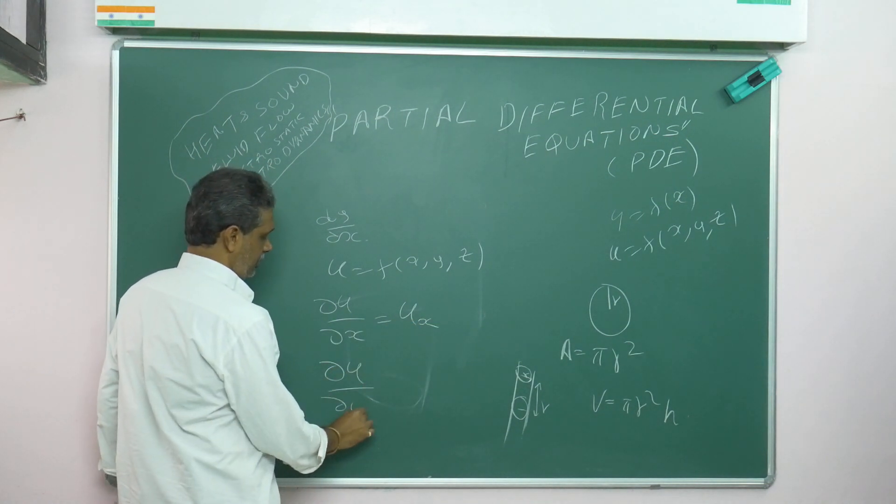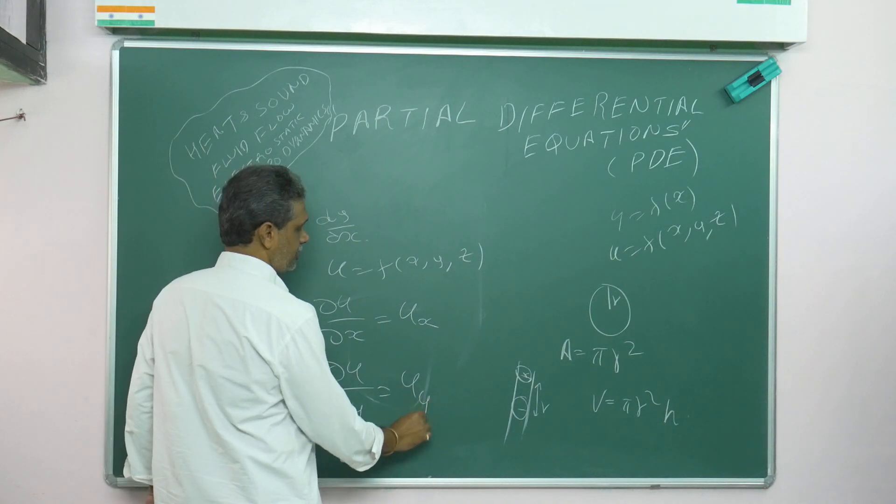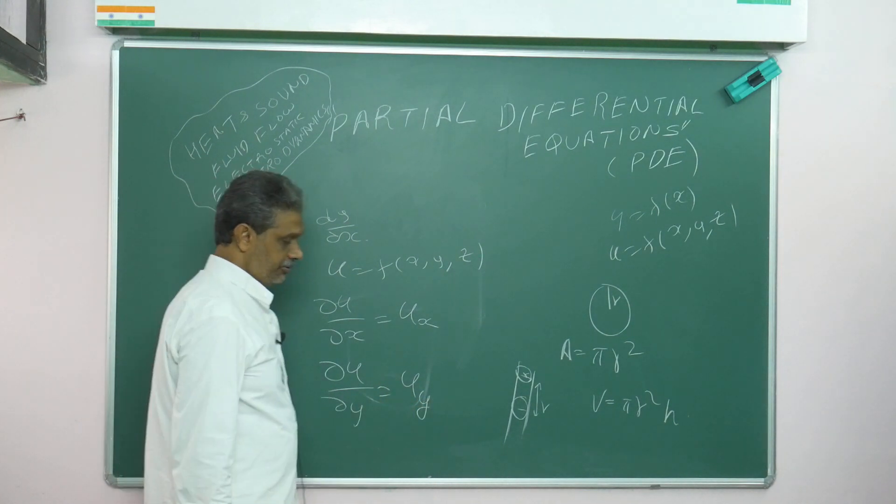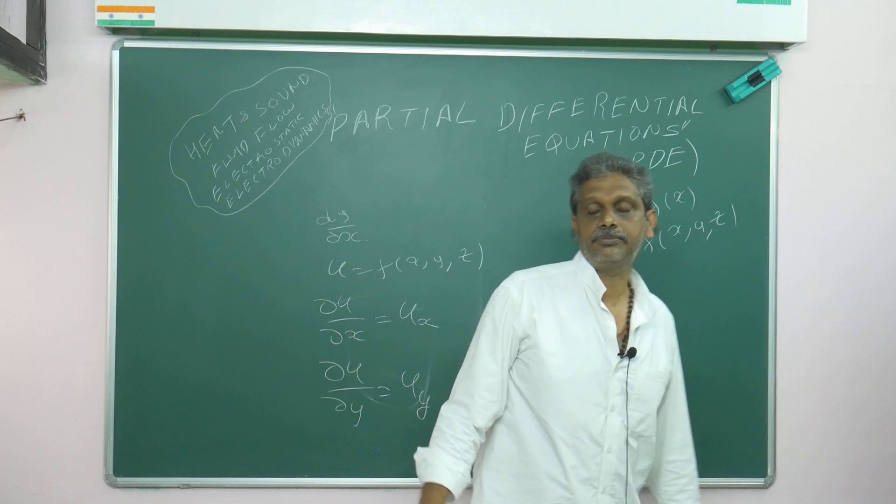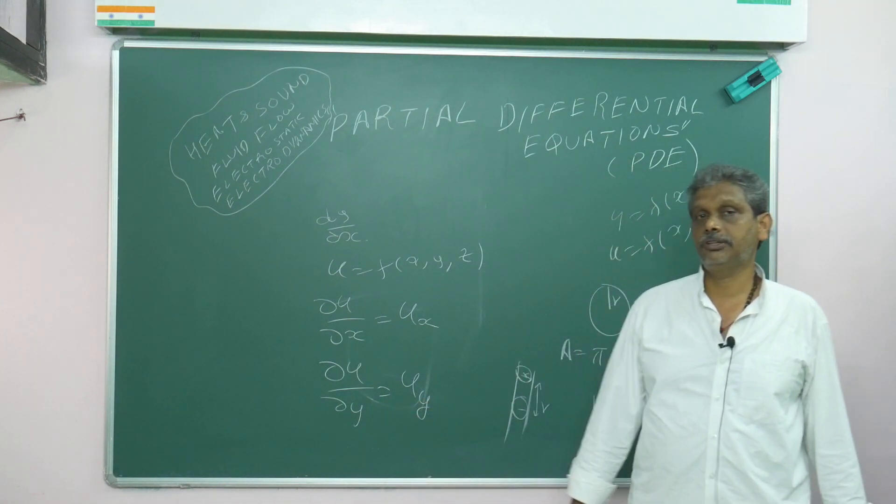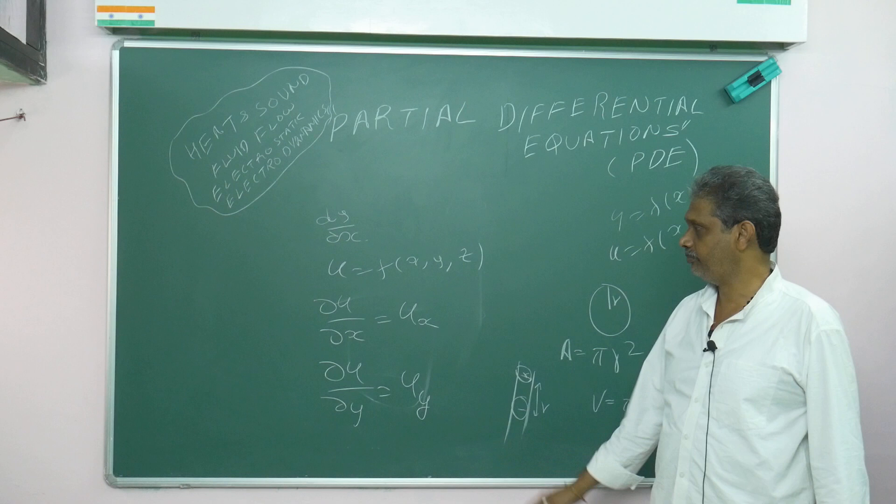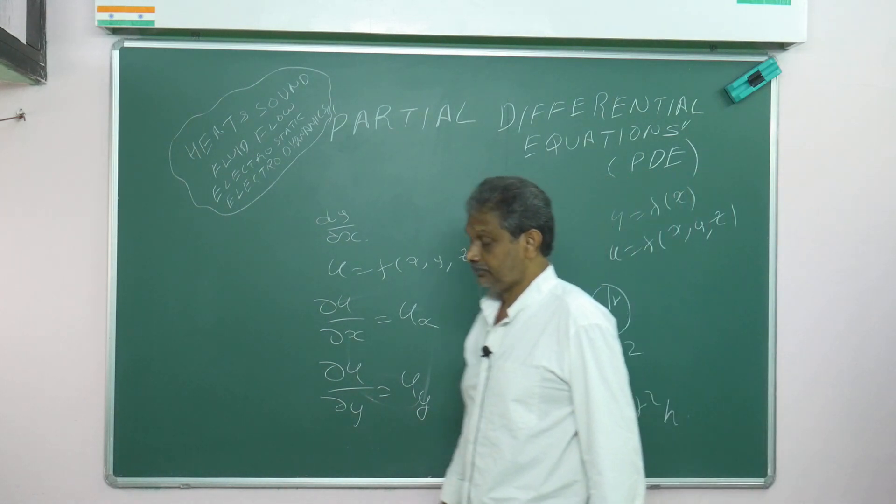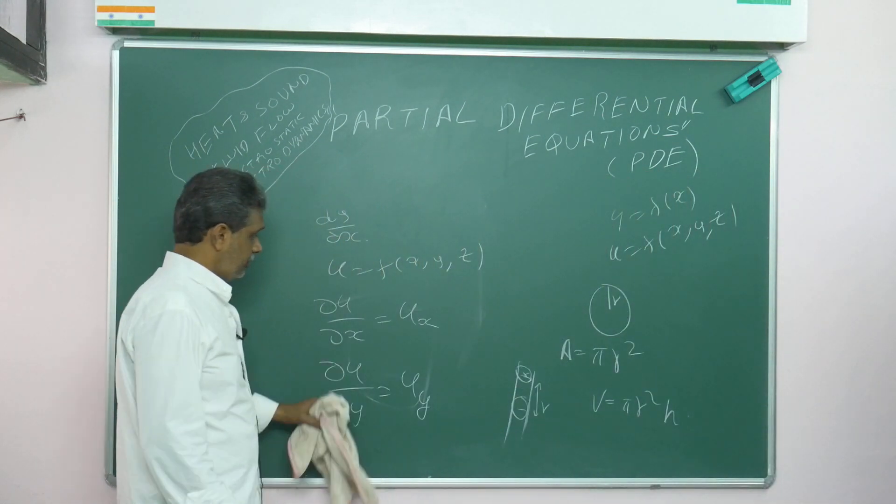If you write ∂u/∂y, it means u subscript y. Both notations are the same—use whichever you prefer. Another notation they use is with dashes. I'll explain that later; for now, just bear with me. Here, I'm differentiating with respect to y only.